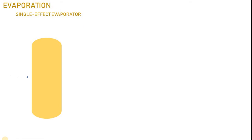This is a single-effect evaporator. The feed enters here, and when the liquid evaporates it exits at the top as vapor, denoted by V. The product, which is now much more concentrated due to evaporation of the liquid solvent, exits at the bottom as product P. The feed enters with composition xf, temperature tf, enthalpy hf, and heat capacity cf. The product has composition xp, temperature tp, and enthalpy hp. The vapor exits with temperature tv and enthalpy hv.